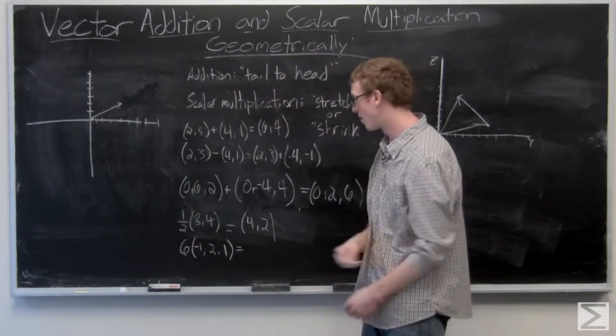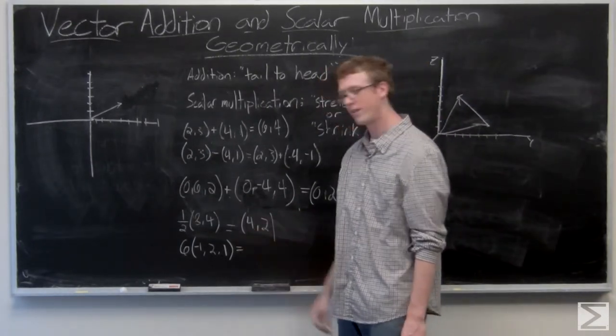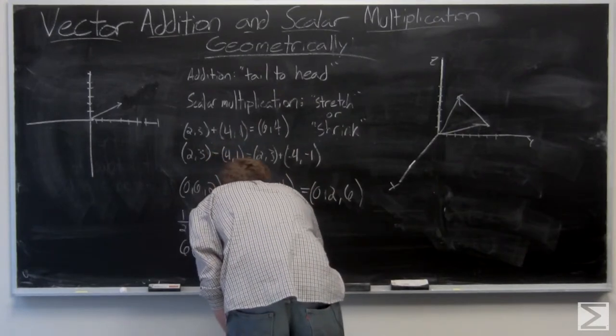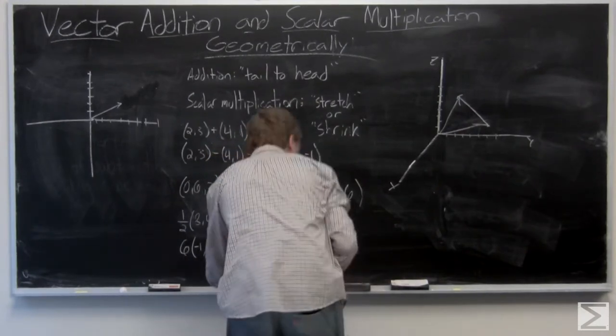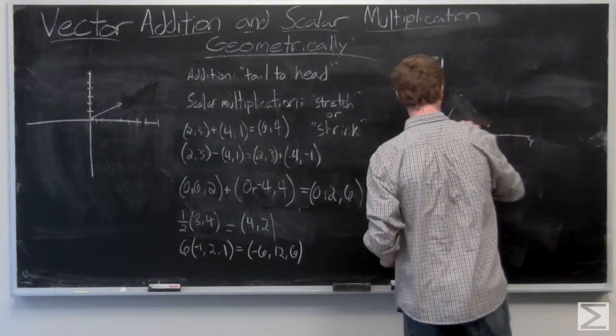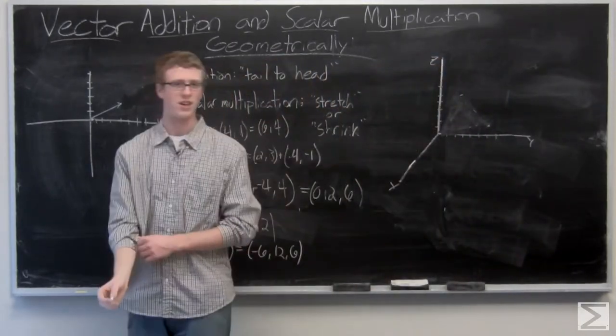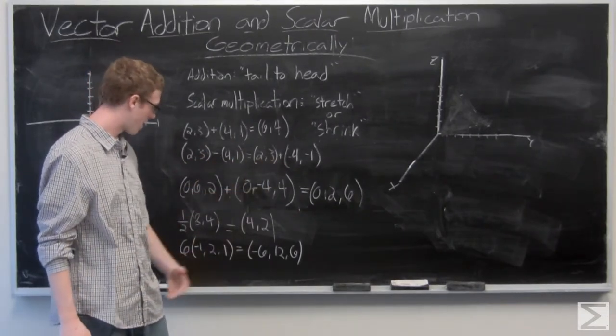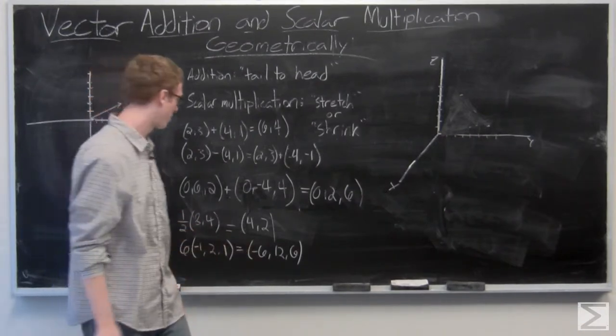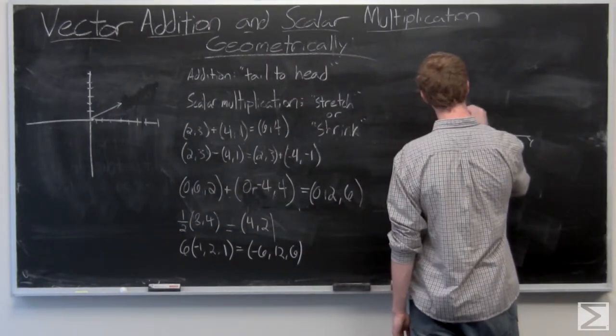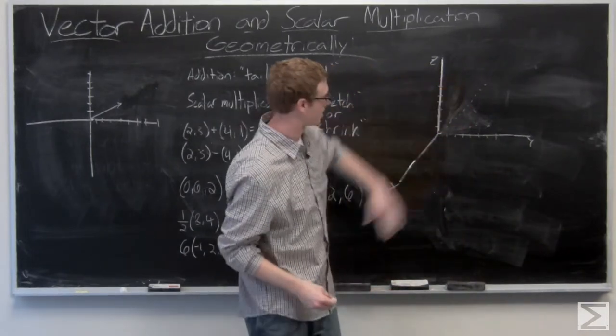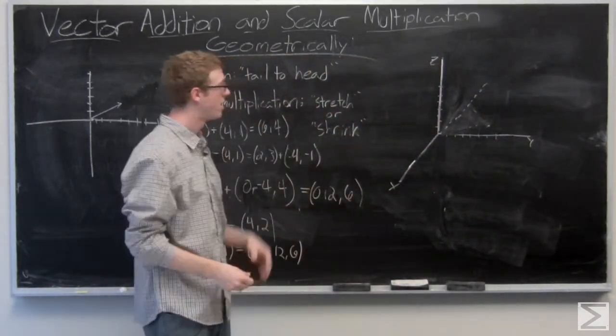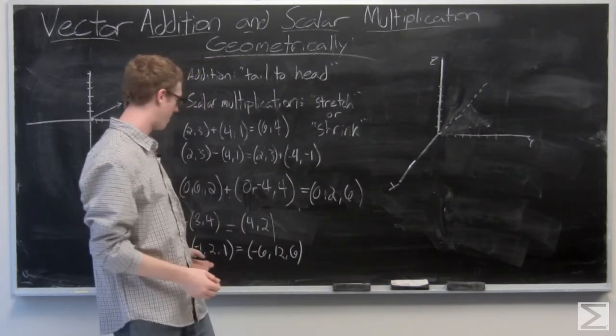So now I'll take a look at one in 3-space as well. We have 6 times (-1,2,1). That's a vector we're just going to multiply component-wise: (-6,12,6). So as you can see, this vector is certainly a little bit more difficult to draw in 3-space because it's going to be going into the board. But I will draw (-1,2,1) and then see how that's going to stretch. So this dotted line I just drew is the x-axis extended backwards—so that's the negative x direction—and then (-1,2,1).